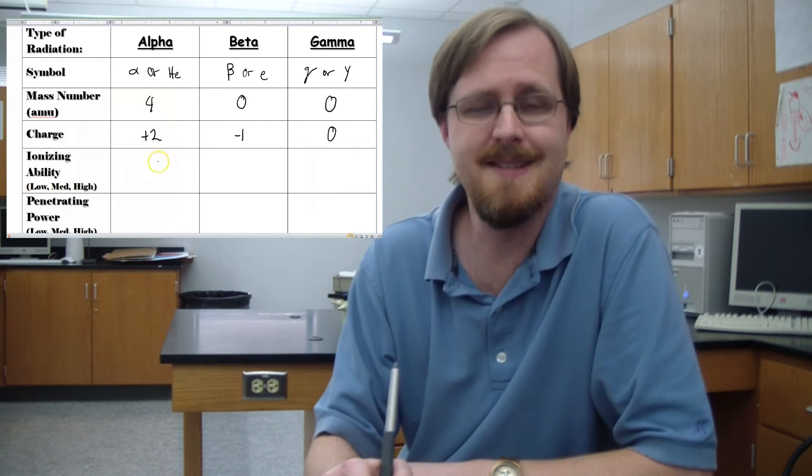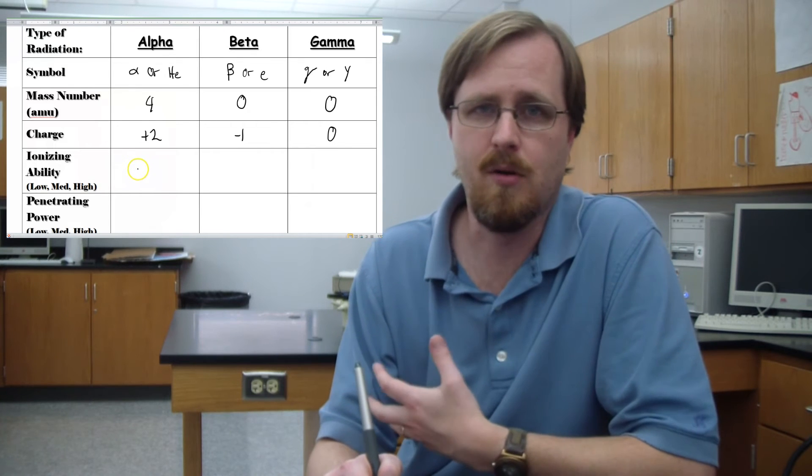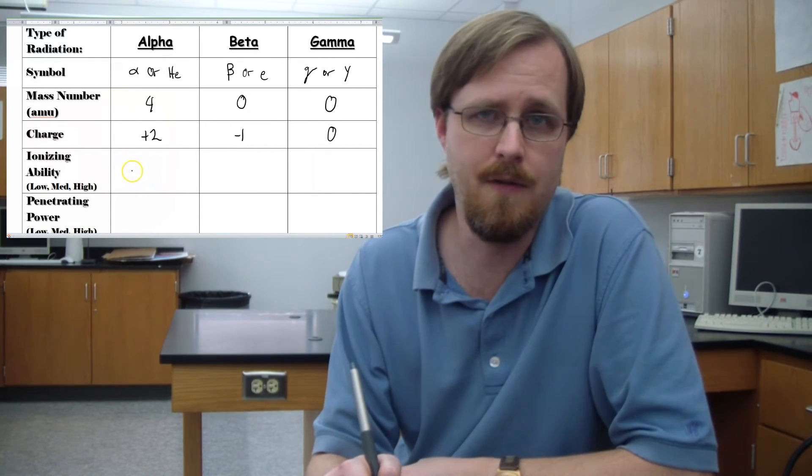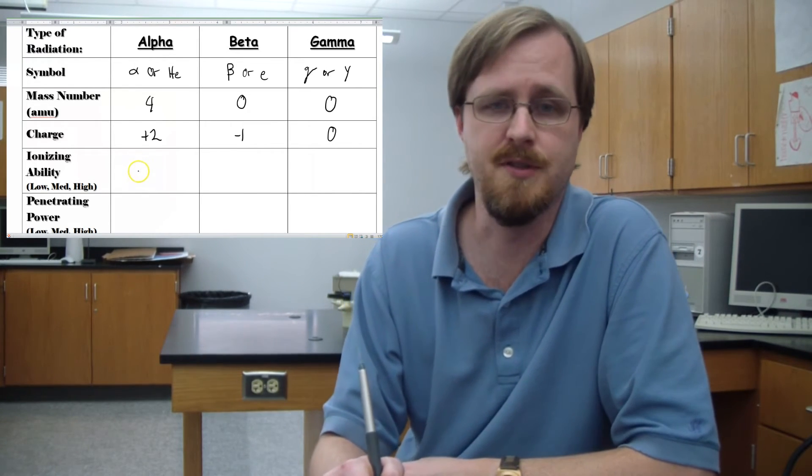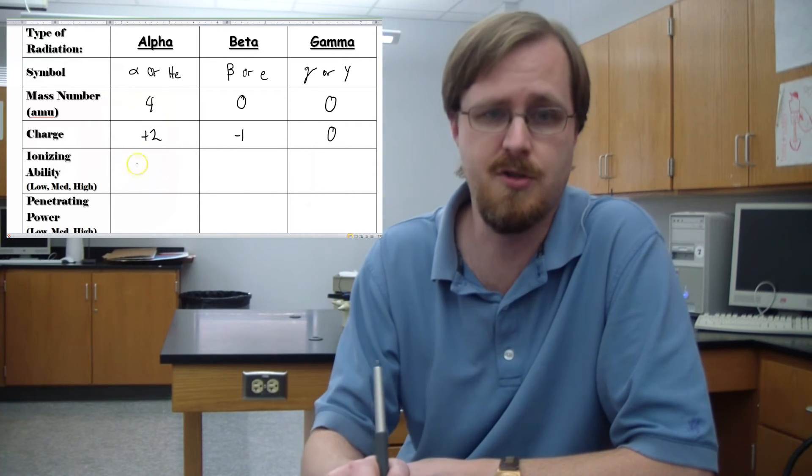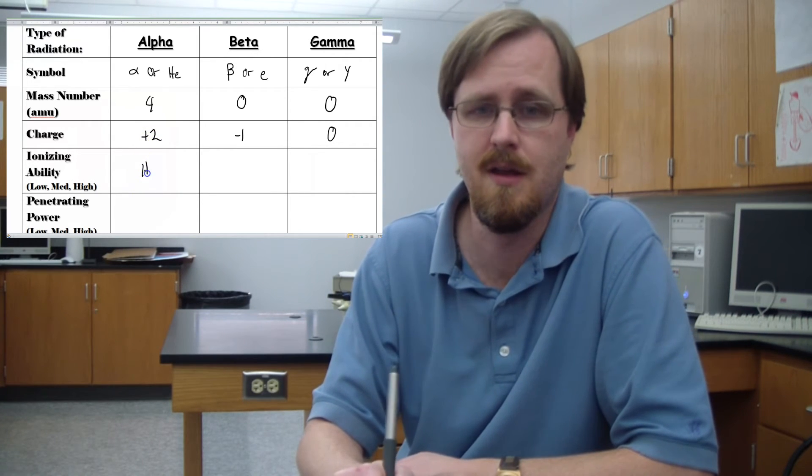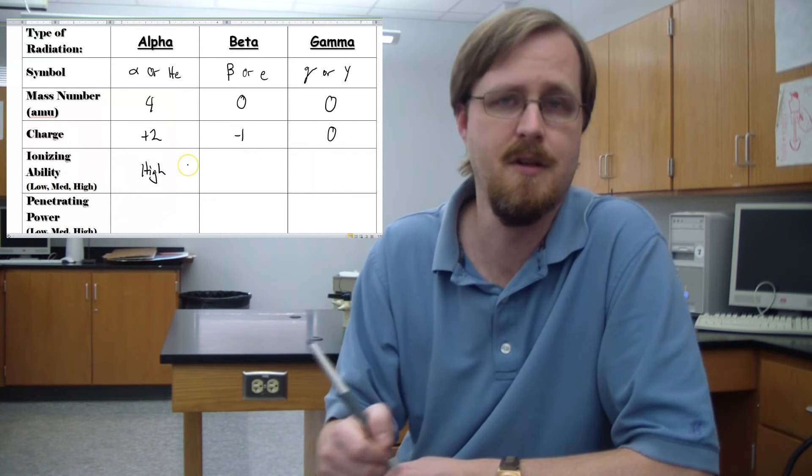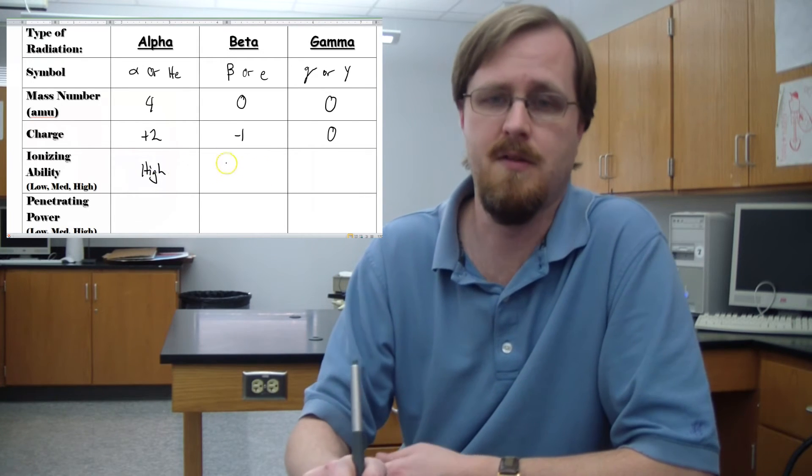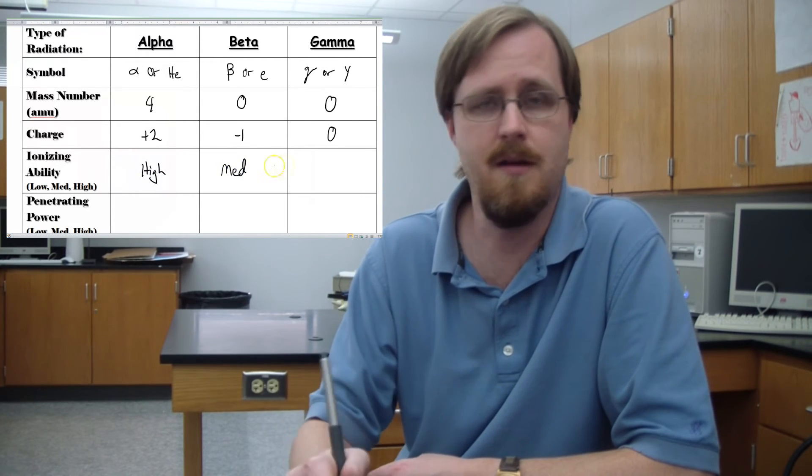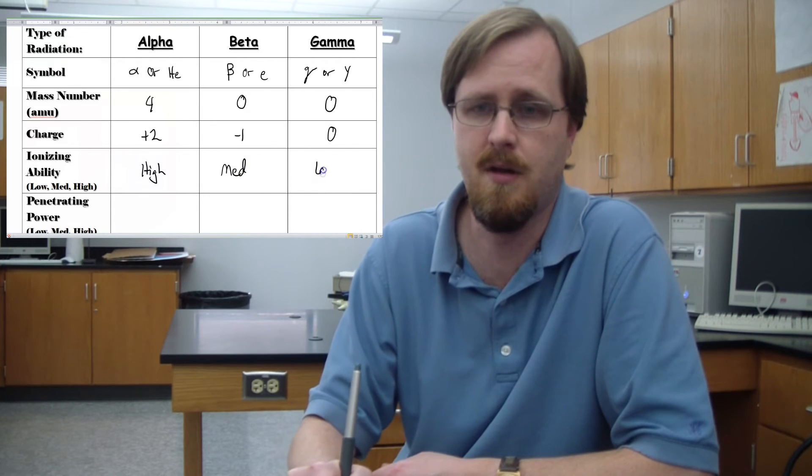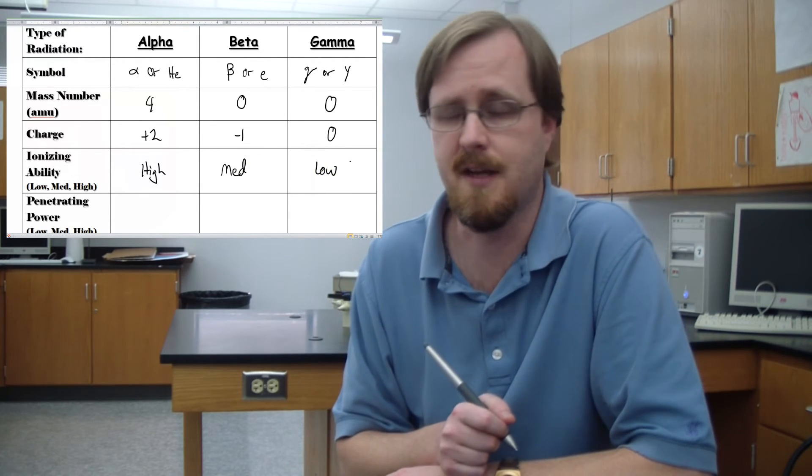For the ionizing ability here. So an alpha particle is the largest of all of the radioactive particles here, and it has the largest charge. So it has, by comparison, the highest of the ionizing abilities. And so that makes the beta, the medium, and gamma low on the ionizing ability scale.